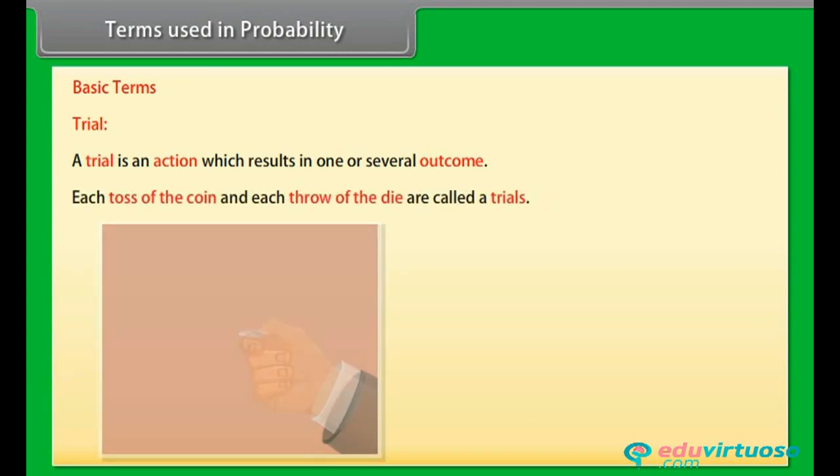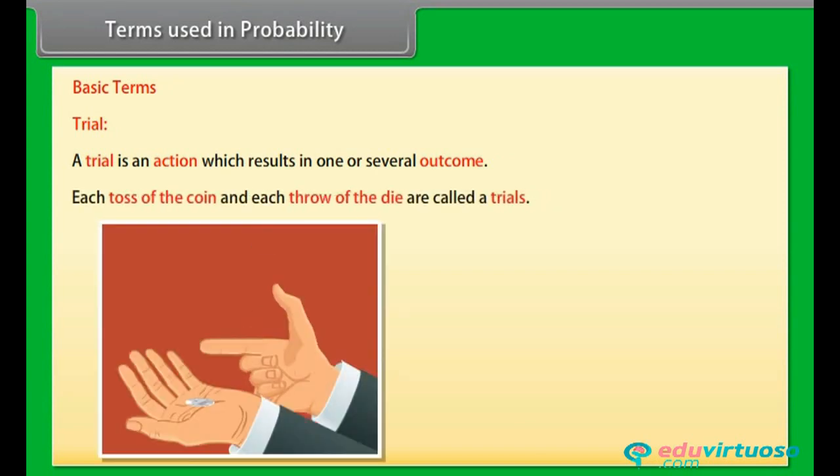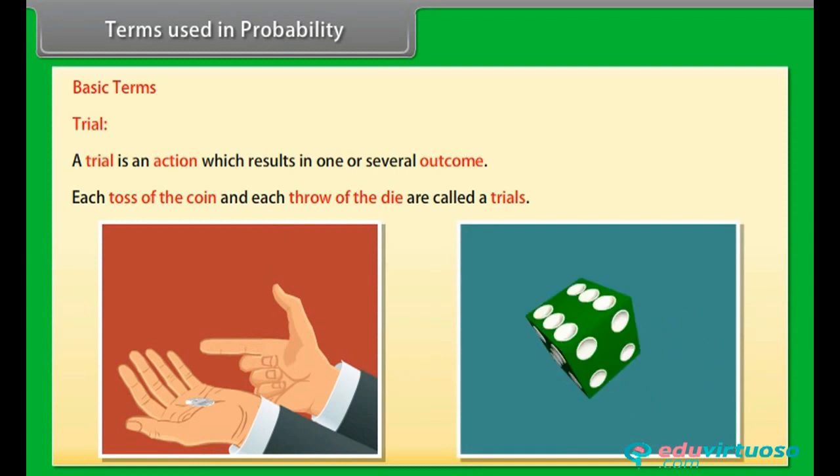Terms used in probability. Before going further, let's learn about basic terms used in probability. Trial: A trial is an action which results in one or several outcomes. For example, each toss of the coin and each throw of the dice are called a trial.